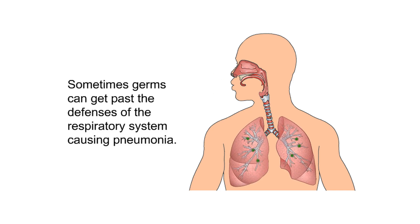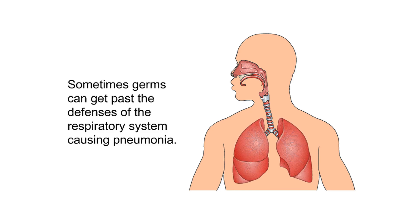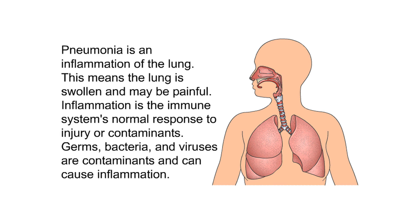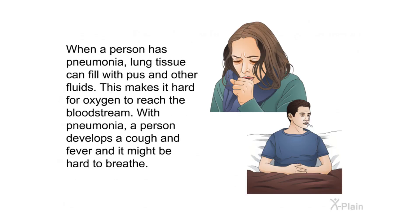Sometimes germs can get past the defenses of the respiratory system, causing pneumonia. Pneumonia is an inflammation of the lung, meaning the lung is swollen and may be painful. Inflammation is the immune system's normal response to injury or contaminants — germs, bacteria, and viruses are contaminants that can cause inflammation. When a person has pneumonia, lung tissue can fill with pus and other fluids, making it hard for oxygen to reach the bloodstream. A person with pneumonia develops a cough and fever, and it might be hard to breathe.